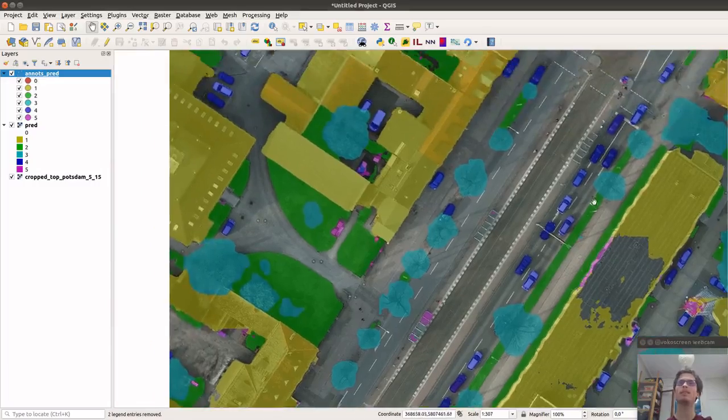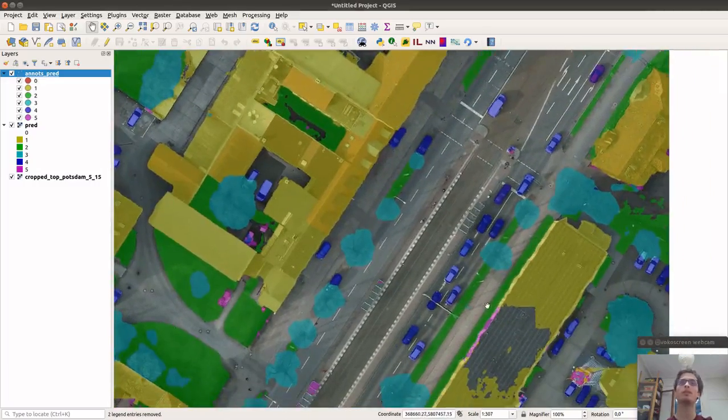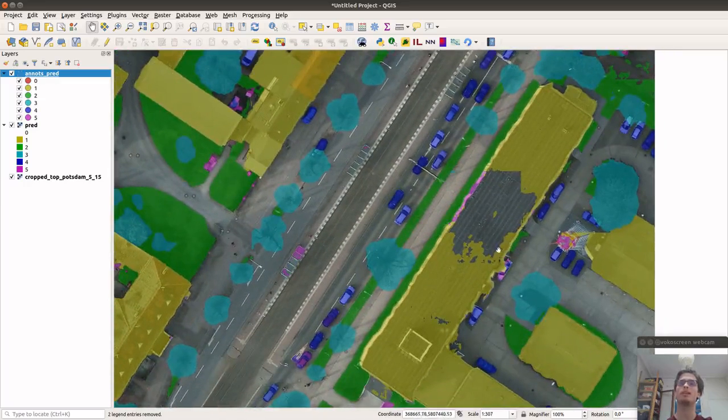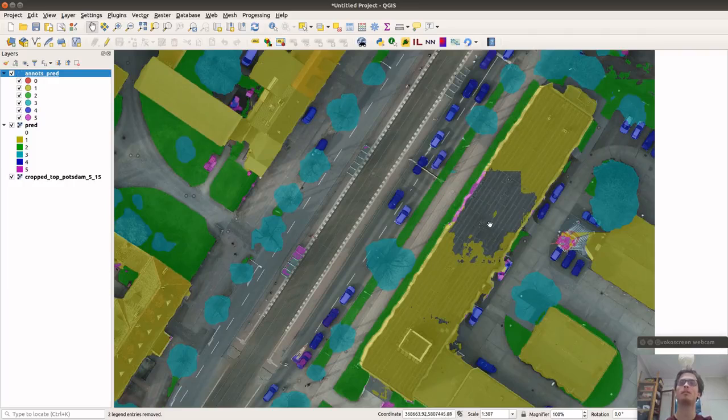So as we can see, the initial segmentation is already pretty accurate. However, this building has not been fully captured by the neural network. And in our work, we refine the segmentation initially proposed by the neural network to enhance its initial prediction with user annotations.